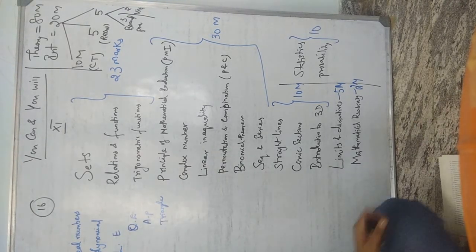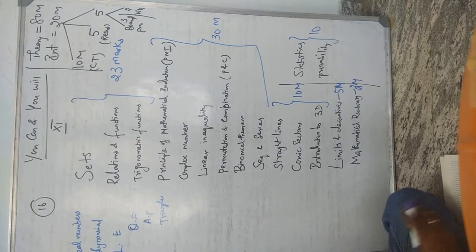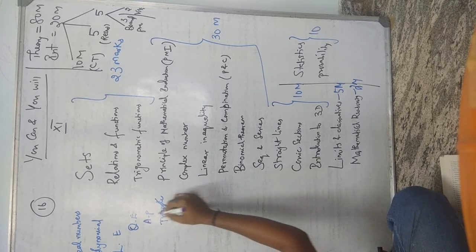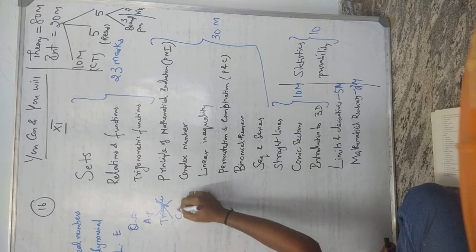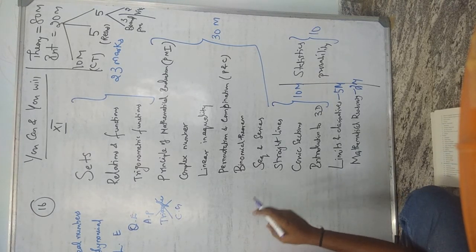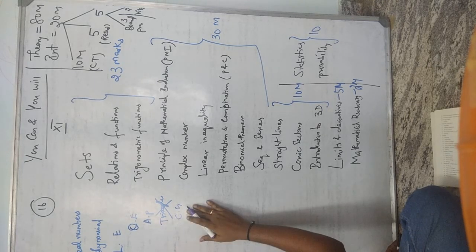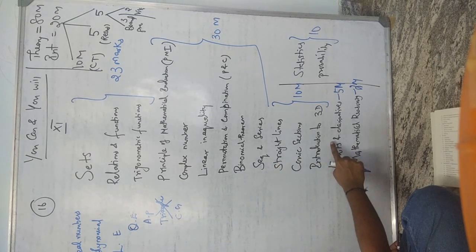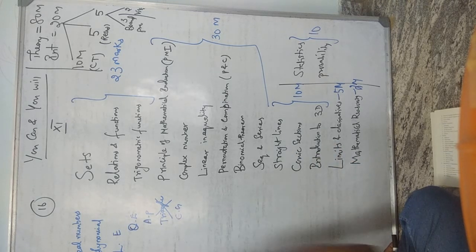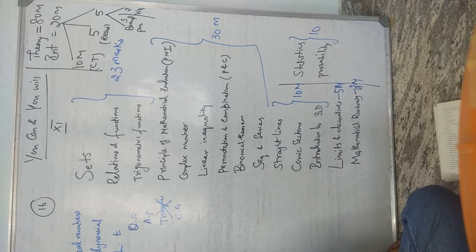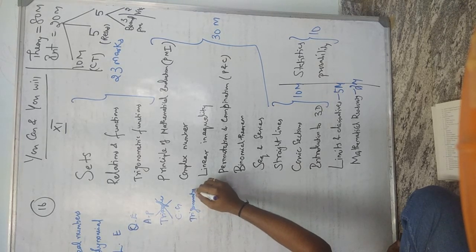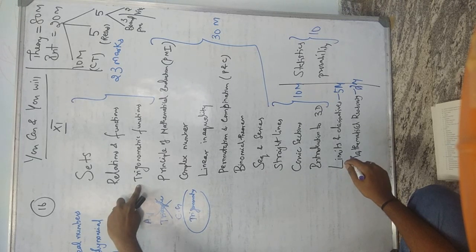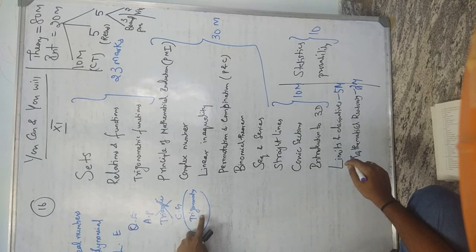From Coordinate Geometry in Class 10, the distance formula, section formula, and centroid formula will all be used in 3D Geometry, Straight Lines, and Class 12. Trigonometry is a very important chapter — it is used in entrance exams and careers. In Class 11, there is a chapter on Trigonometric Functions, and all Class 10 trigonometry formulas carry forward into Class 12.